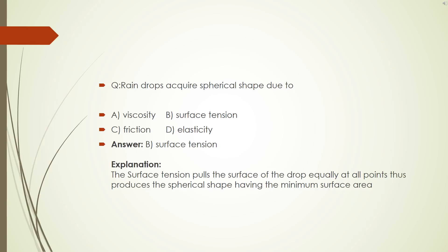Rain drops are quasi-spherical shaped due to A, viscosity, B, surface tension, C, friction, D, elasticity. The correct answer is B, surface tension. The surface tension pulls the surface of the drop equal at all the points, thus produces the spherical shape having the minimum surface area.